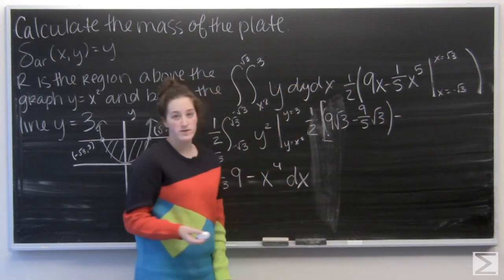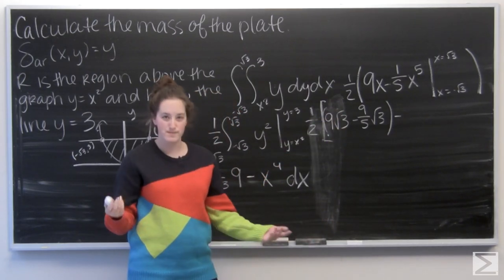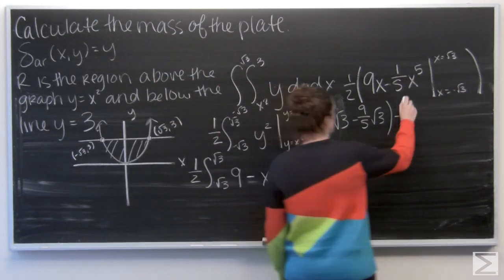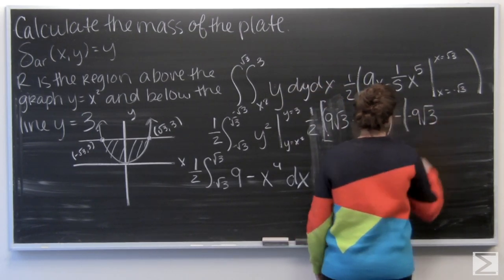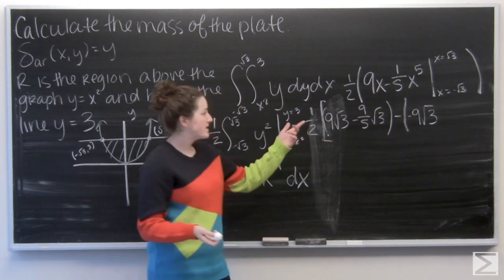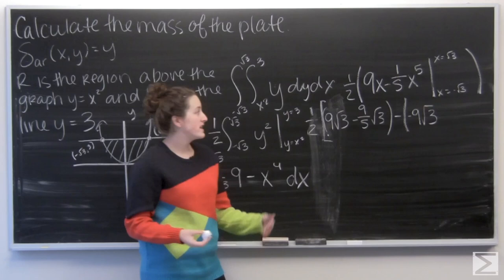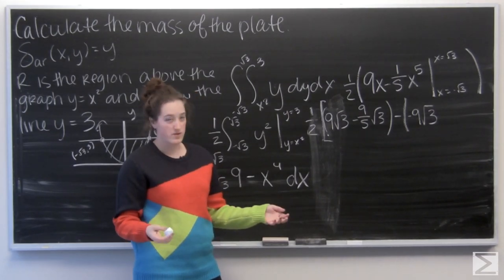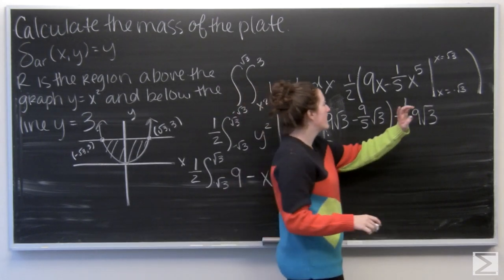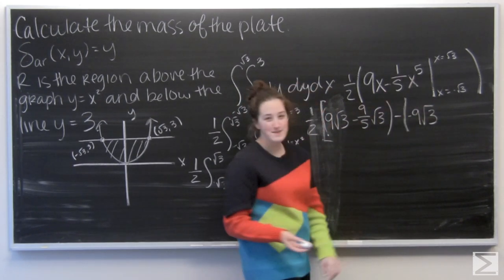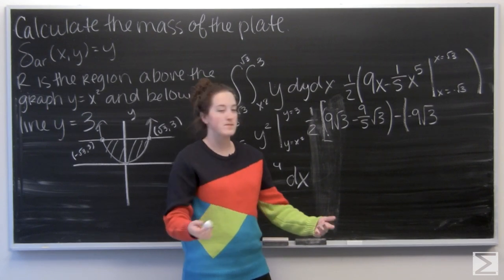Now let's plug in negative square root of 3. So 9 times the negative square root of 3 is just negative 9 square roots of 3. And then just like before, when I plug in negative root of 3 for 1 fifth x to the fifth, I'm going to get 9 fifths square root of 3. But here I have to watch my sign. So I have 6 negative signs total, which is a lot. But it's an even number, so that means I'm going to be adding.